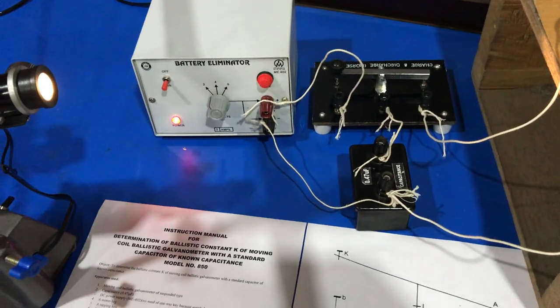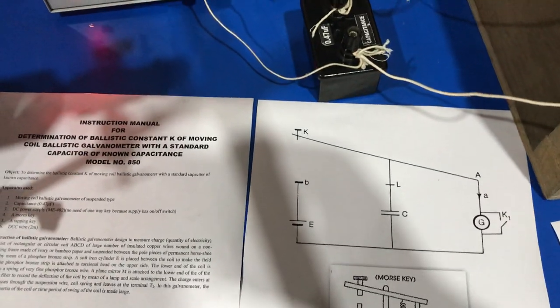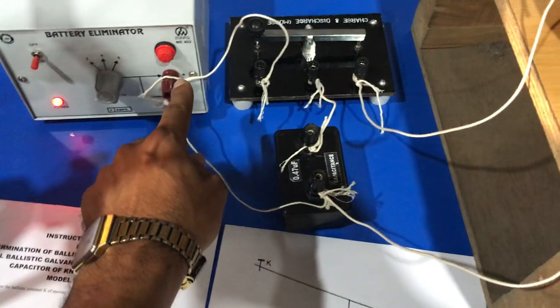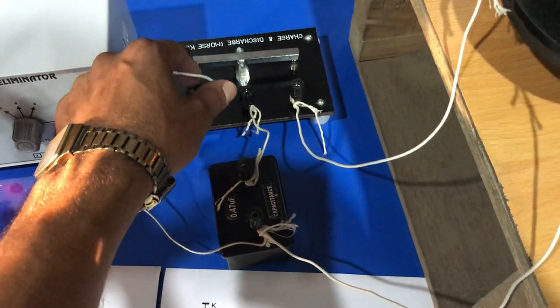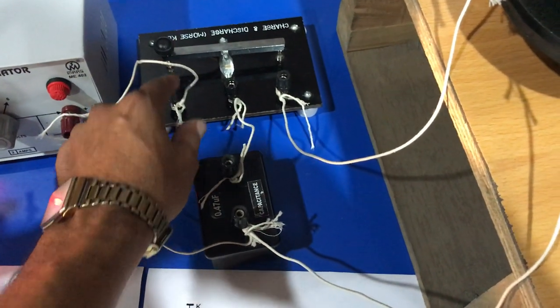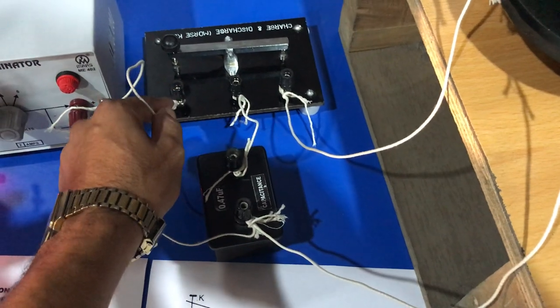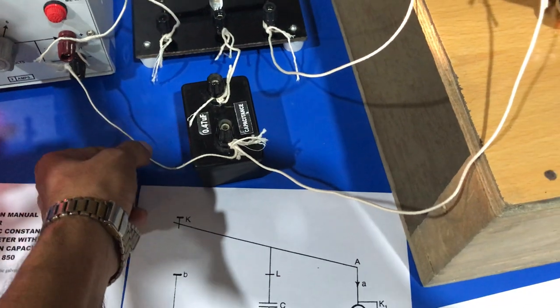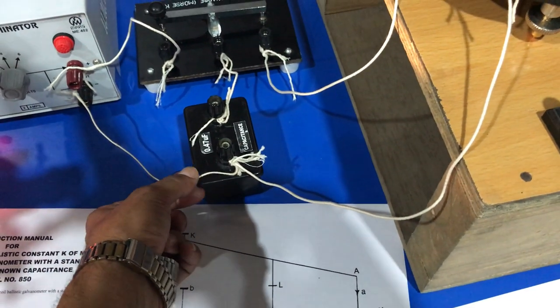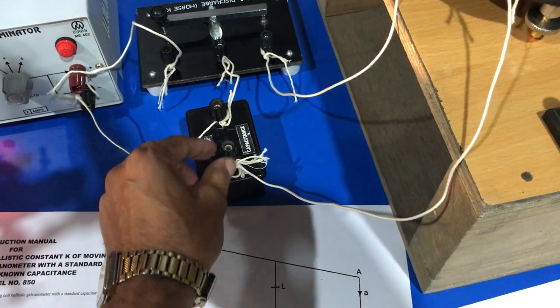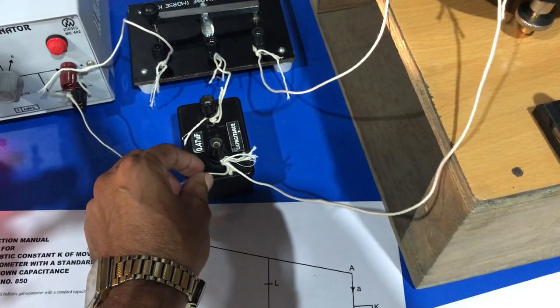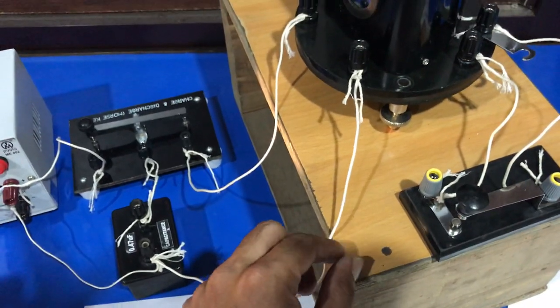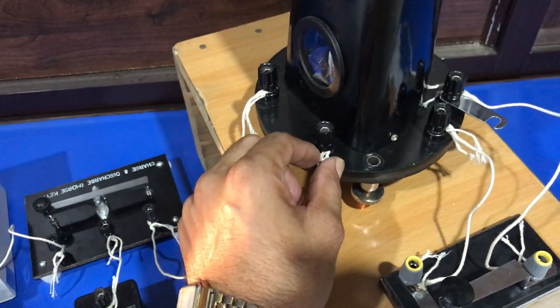The positive terminal of DC battery is connected to the C point of the Morse key, and the negative terminal of battery eliminator is connected to one end of the capacitor. The same end of the capacitor is connected to the ballistic galvanometer.